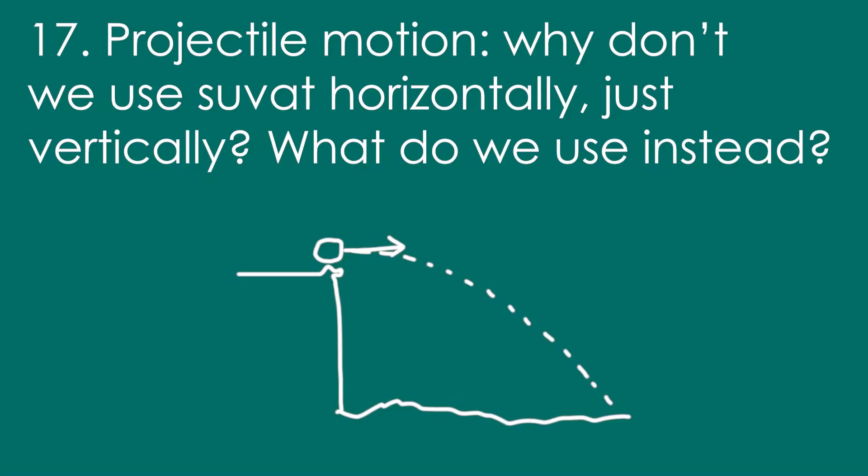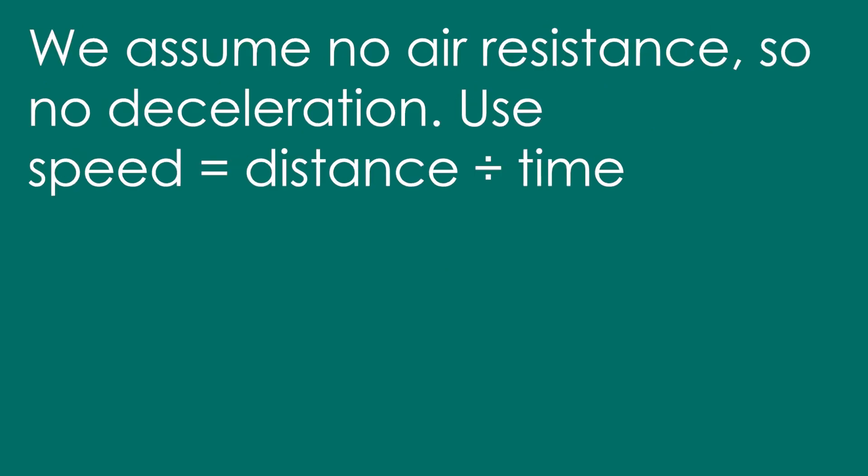17. With projectile motion, why don't we use SUVAT horizontally? Just vertically. What do we use instead? We assume no air resistance, so no deceleration, so we don't need SUVAT. Instead we use speed equals distance over time for the horizontal speed.